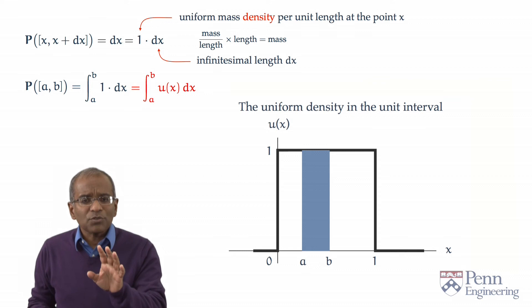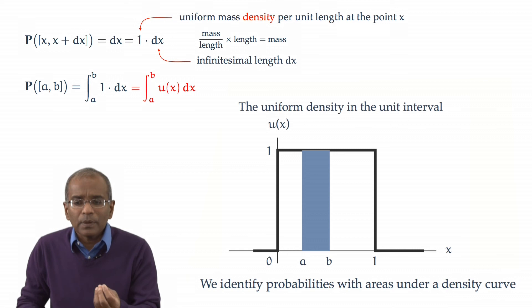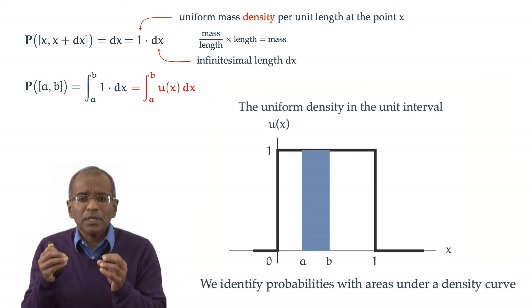The probability is obtained by integrating a density over the region of interest. That gives rise now to this idea that probabilities in the continuum can be associated with integrals with areas under a curve. This is a potent idea because now this leads to the idea that we can perhaps have other continuum experiments with different mass distributions per unit length. This is next.